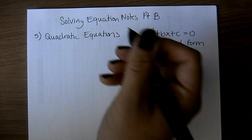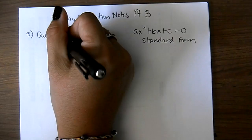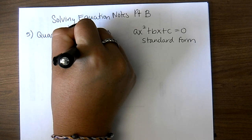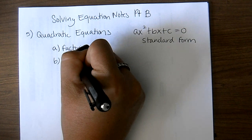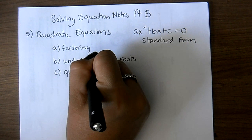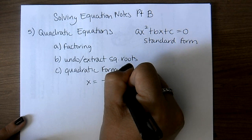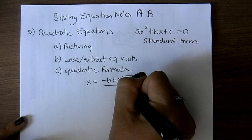There are several ways you can go about solving quadratic equations. The first is to solve by factoring, which we know how to do. You can also undo or extract square roots. You could use the quadratic formula, which is in my opinion the least favorable way, but some people like it. The quadratic formula is x equals negative b plus or minus the square root of b squared minus 4ac all over 2a.